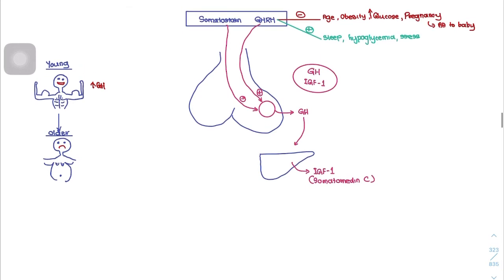Growth hormone and its liver-produced molecule somatomedin C (IGF-1) can be considered as one functional entity since they act on the same pathways. Together, growth hormone and IGF-1 inhibit the anterior pituitary cells and also inhibit the release of growth hormone releasing hormone from the hypothalamus, forming a negative feedback loop.